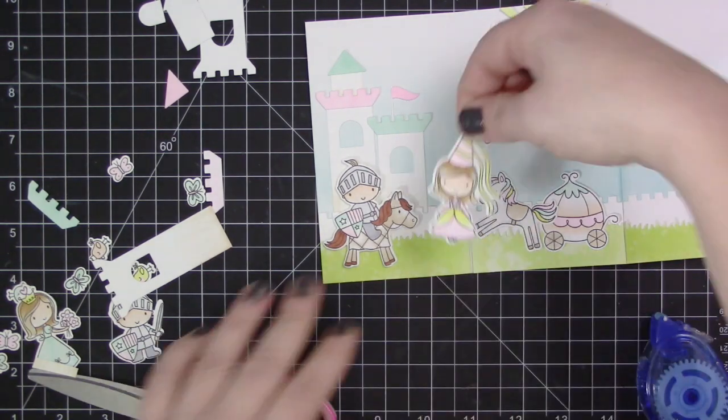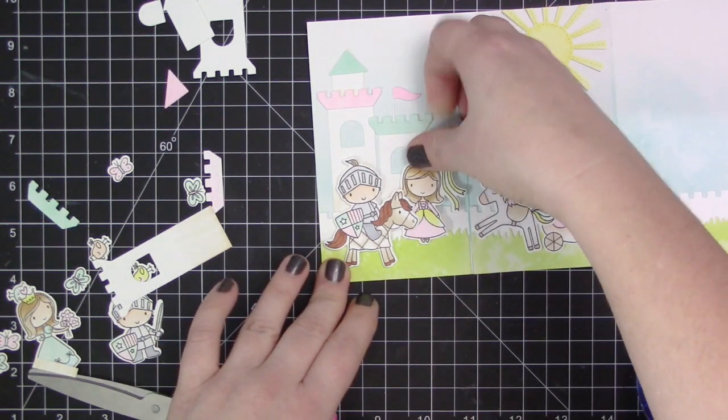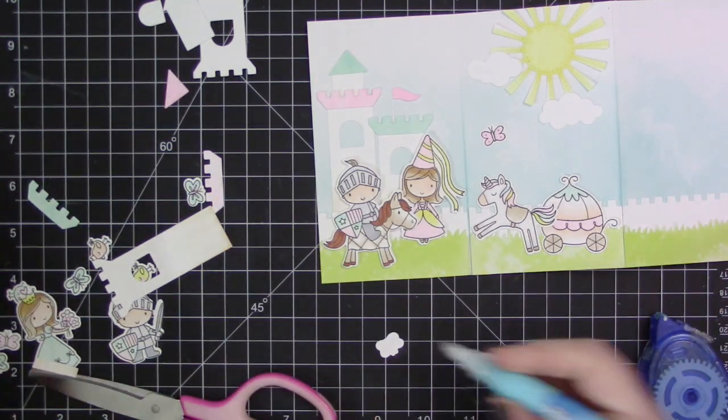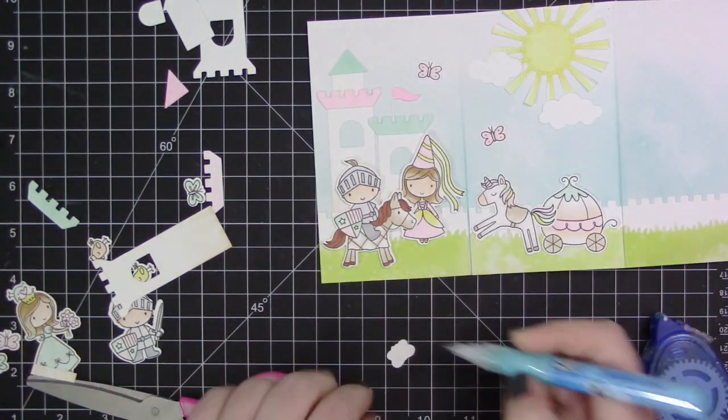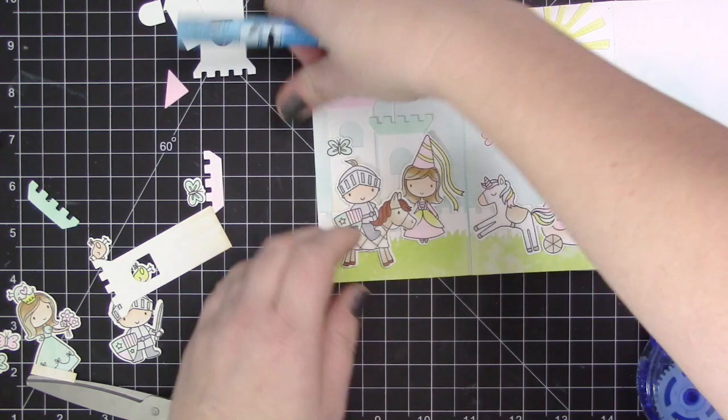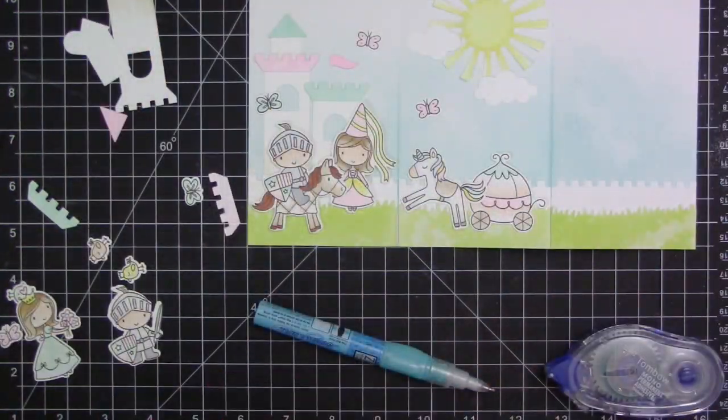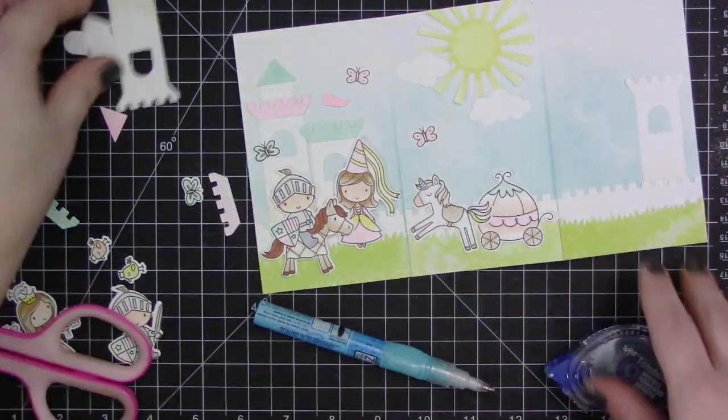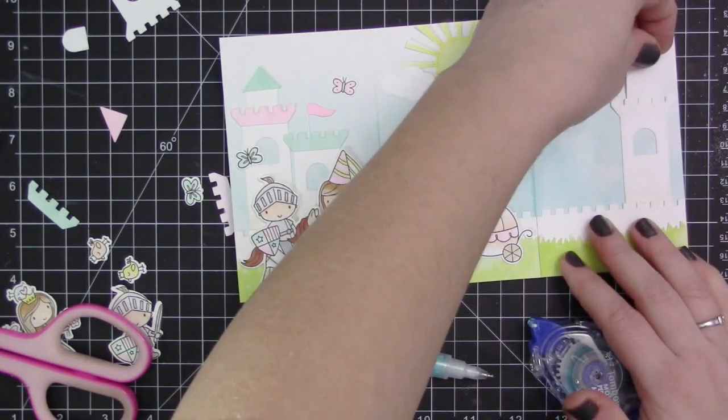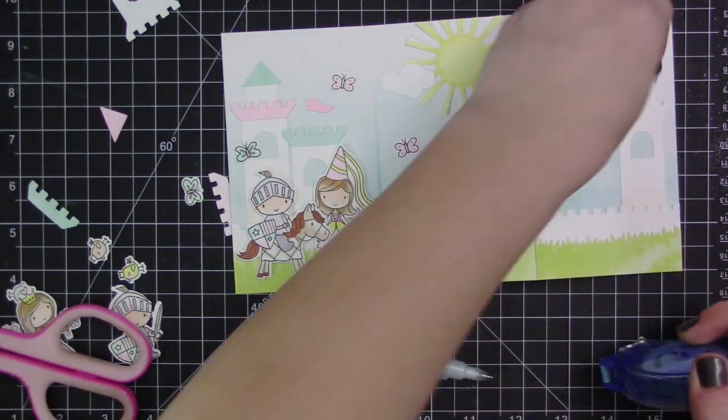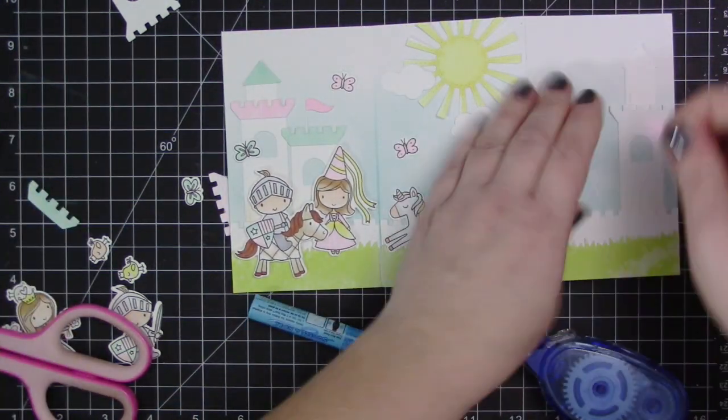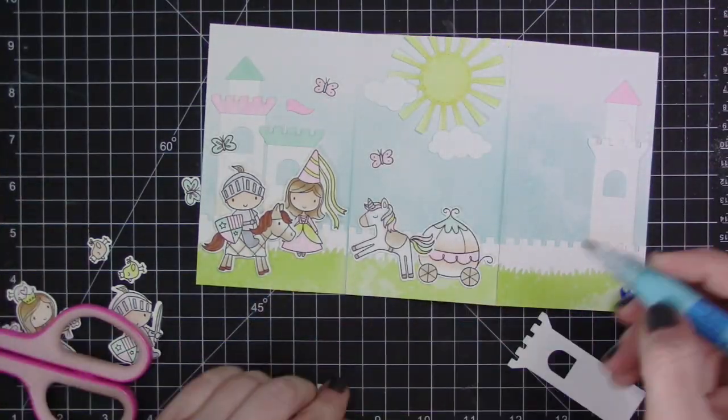I'm using some foam adhesive for the very front of the card. I had to position my princess a little bit different so that she would fit on the panel with the prince. You only want to use foam adhesive on the front of the card because everything else is going to be in that tri-fold and it's going to fold together. Just make sure you use regular adhesive for the middle and the last panel. But feel free to use the foam adhesive on the front for a little bit of dimension.